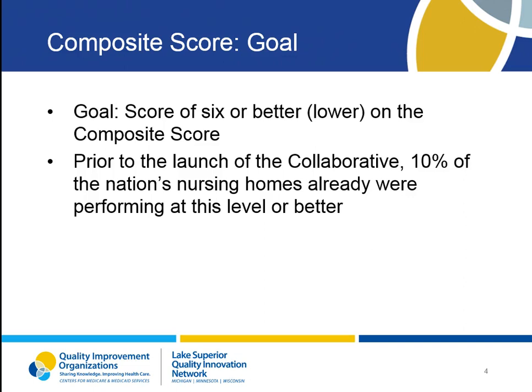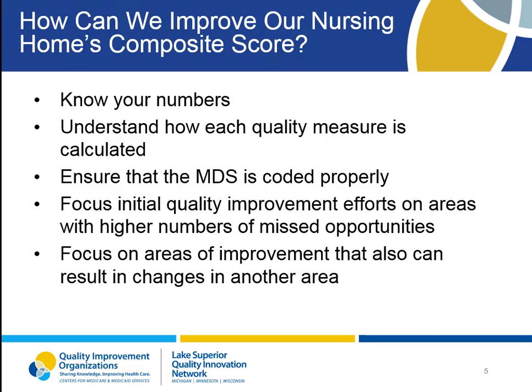However, keep in mind that there are likely multiple reasons why individual homes may have a high or low composite score, which may not necessarily reflect the quality of your organization. To improve your composite score, it is important that you review your CASPER reports and understand how each of the 13 quality measures that make up the composite score is calculated. Knowing how each quality score is calculated and reviewing the MDS for coding accuracy will help you understand what needs to be done to improve each of the quality measures. Once you have reviewed the data, you can focus quality improvement efforts on areas with higher numbers of missed opportunities or systems improvements that will affect other areas.